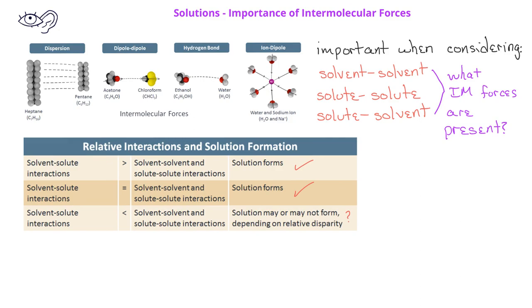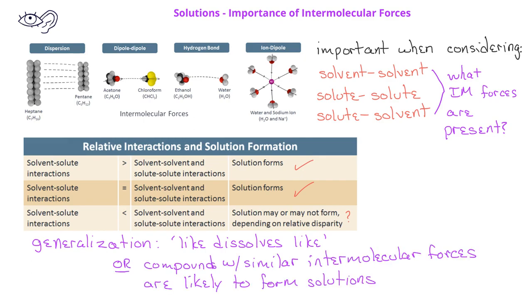When we are predicting the relative strengths of these different kinds of interactions, we can make the generalization that like dissolves like. Or put another way, we can say that compounds that have similar types and strengths of intermolecular forces will be more likely to be soluble in each other.